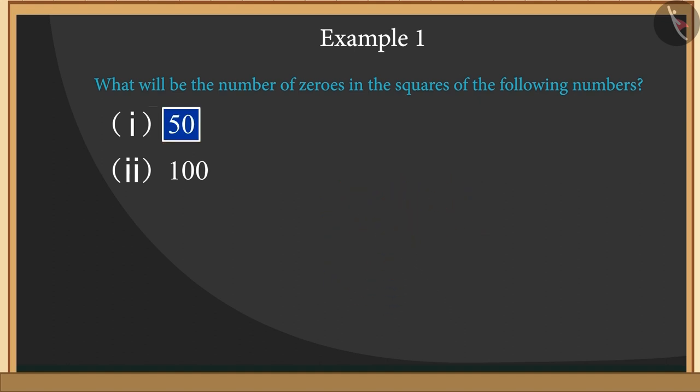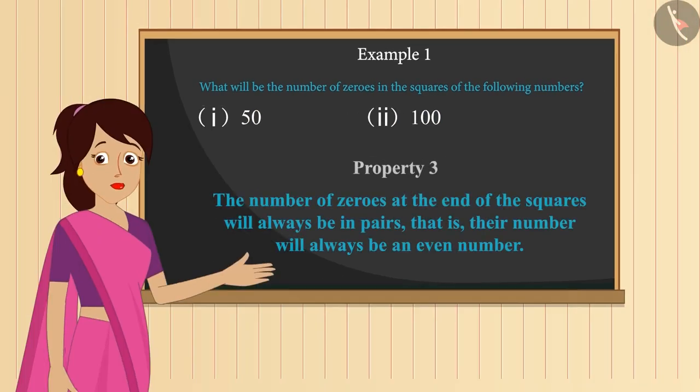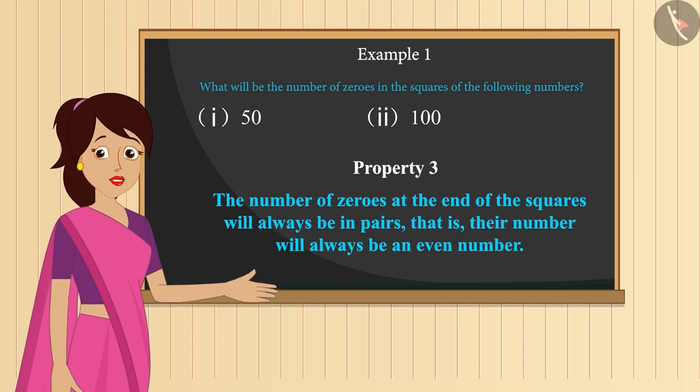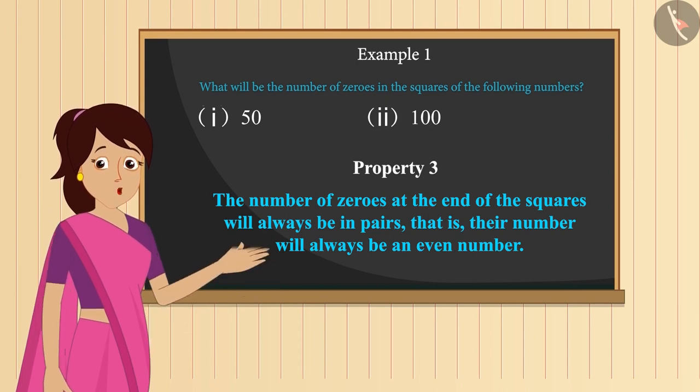The number 50 has one zero and the number 100 has two zeros. The number of zeros at the end of the squares will be in pairs, that is, their count will always be an even number.